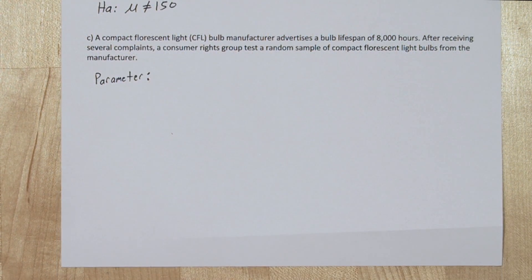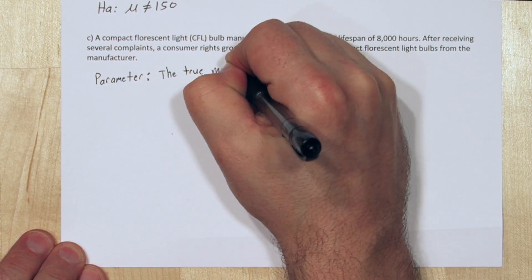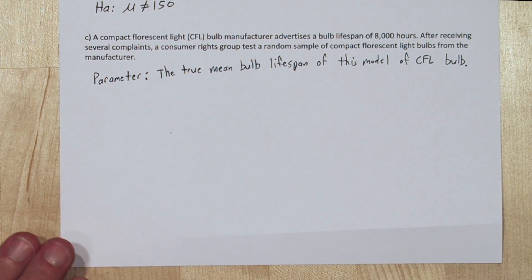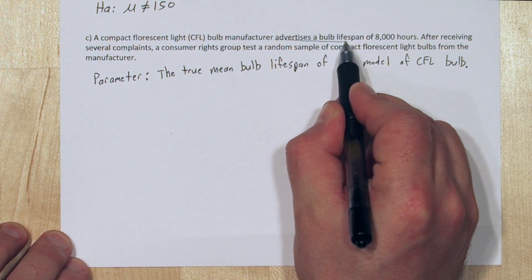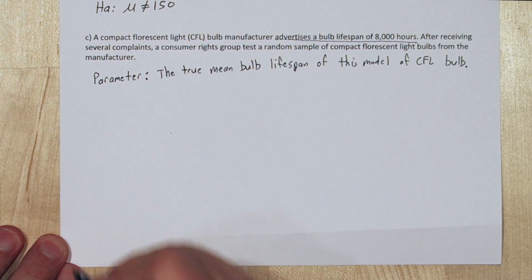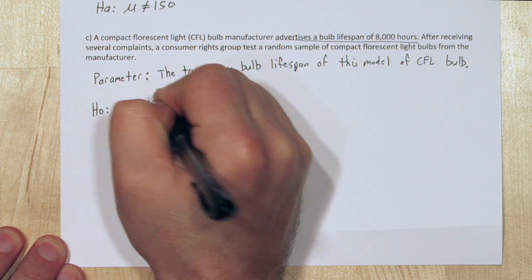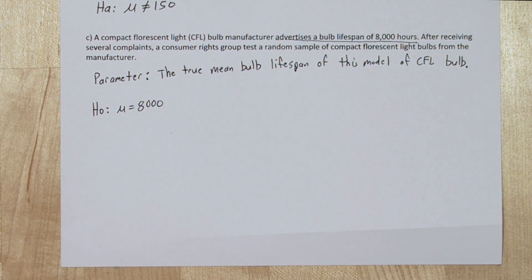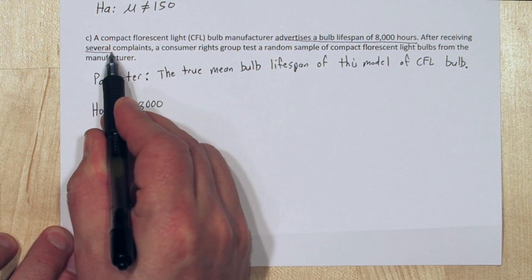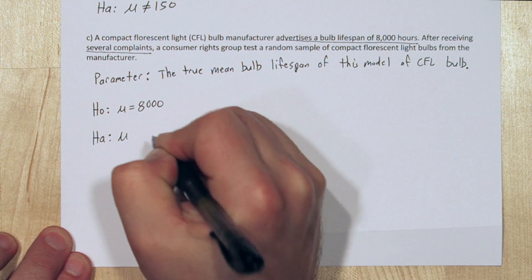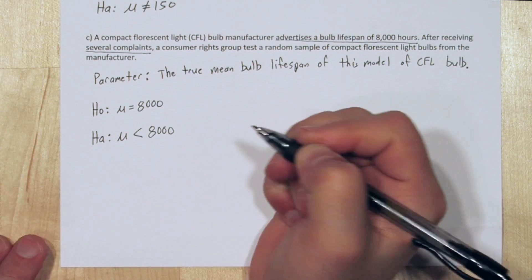In part C, the parameter of interest is the true mean bulb lifespan of this model of CFL bulb in hours. Since the advertisement claims the lifespan is 8,000, the status quo is 8,000. So the null hypothesis is μ equals 8,000. Since these were complaints, they're probably complaining that the lifespan was less than 8,000. So the alternative hypothesis is that μ is less than 8,000.